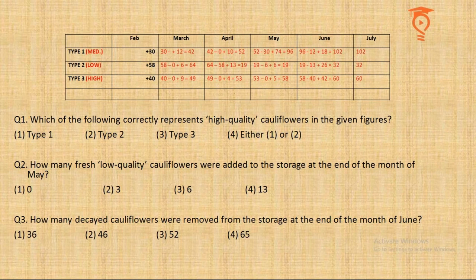Using Case 2 calculations: Question 1 — which type correctly represents high quality cauliflowers? There is only one high quality type, and that is Type 3. Quick answer.